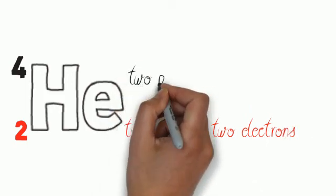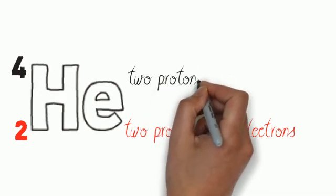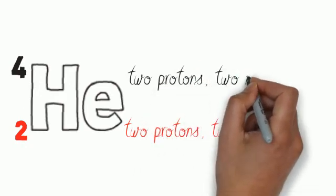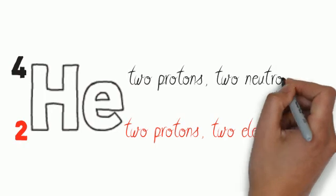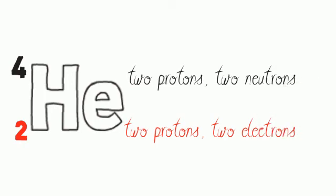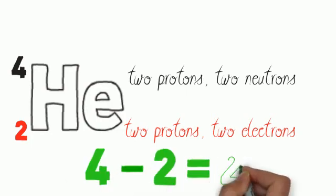If it's got two protons, it must have two neutrons, as two plus two equals four. Don't forget the mass of an atom comes from its protons and neutrons. So just take away the bottom number from the top number to get the number of neutrons.